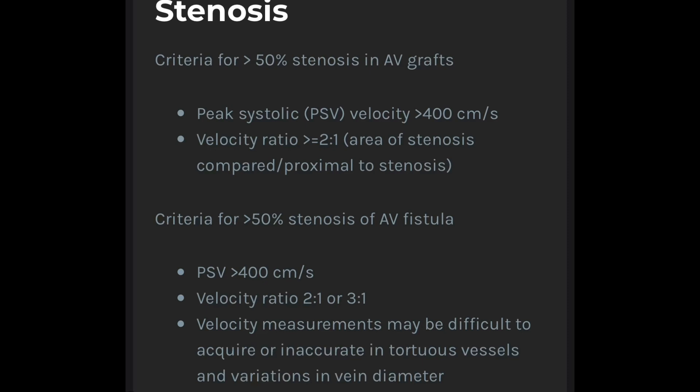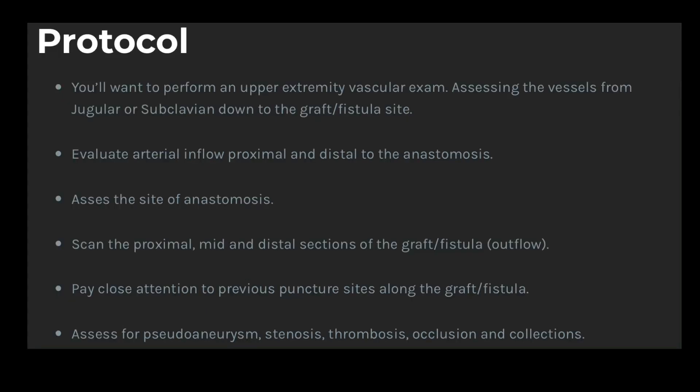For the protocol, you're going to want to use a linear probe, high resolution, anywhere from 7 to 12 MHz. You're going to want to perform an upper extremity vascular exam. Begin your assessment at the jugular or subclavian vein and work your way down to the fistula or graft site. Evaluate the arterial inflow, proximal and distal to the anastomosis. Assess the site of anastomosis, then scan the proximal, mid, and distal sections of the graft or fistula. Pay close attention to previous puncture sites to rule out pseudoaneurysms or collections.